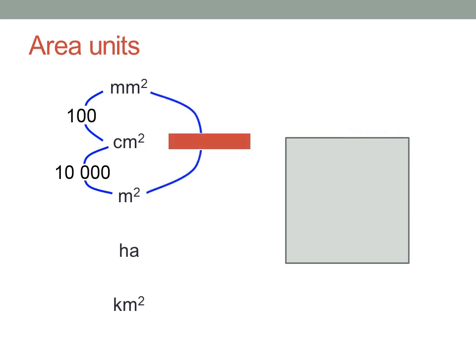So then, how many square millimetres are there in a square metre? Not a thousand, but rather one hundred times ten thousand, which makes one million square millimetres in a square metre.